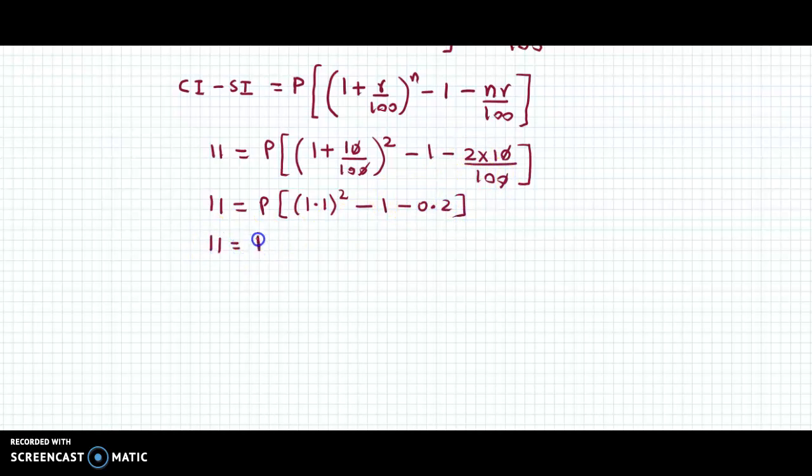We have 11 equals P into 1.21 minus 1 minus 0.2.